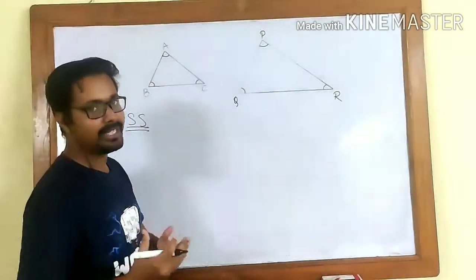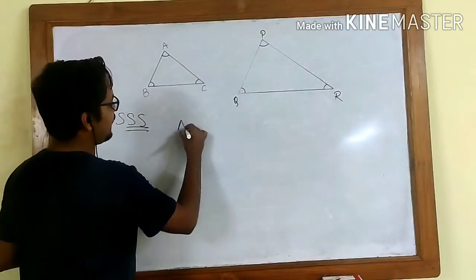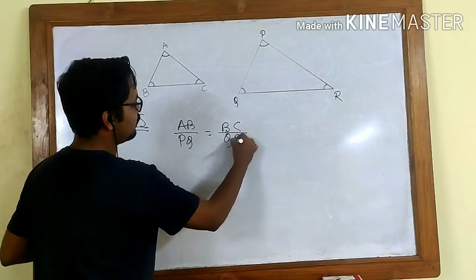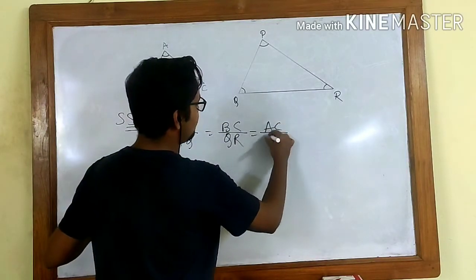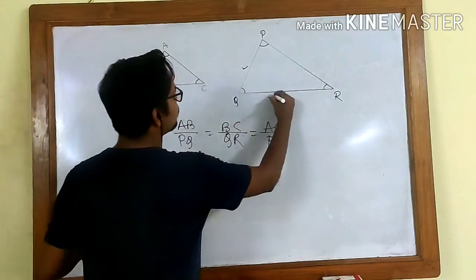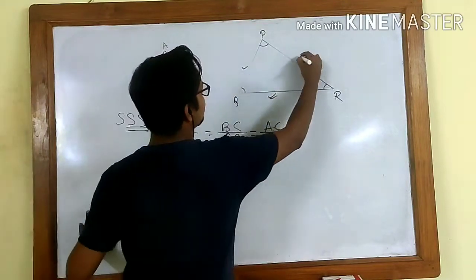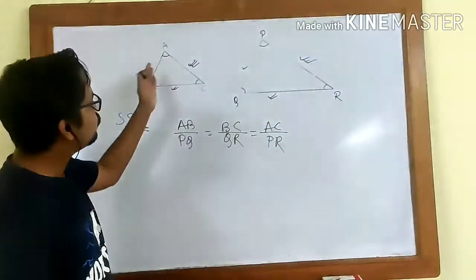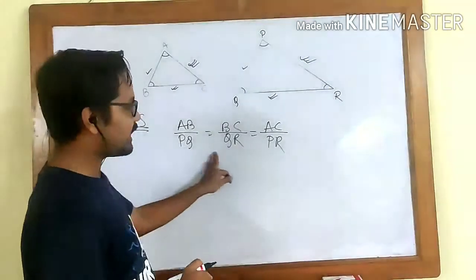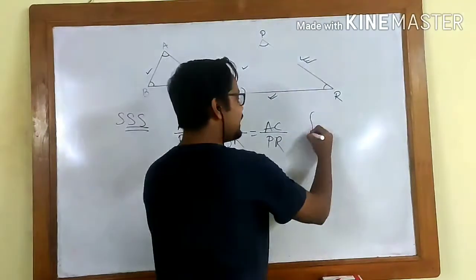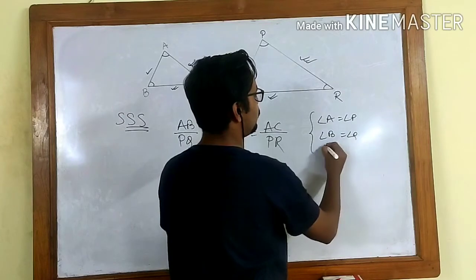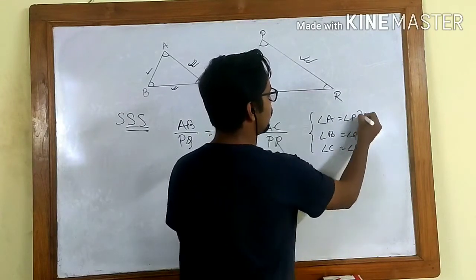In the SSS criteria, if by any means we can prove that AB to PQ equals BC to QR equals AC to PR — that is, the ratio of the first sides, the second sides, and the third sides are all equal — then the two triangles are similar. If the sides are proportional, then automatically the angles will be equal: angle A equal to P, B equal to Q, and C equal to R.